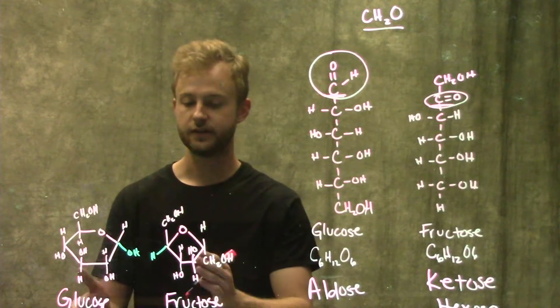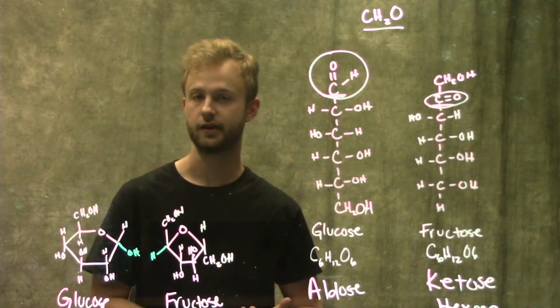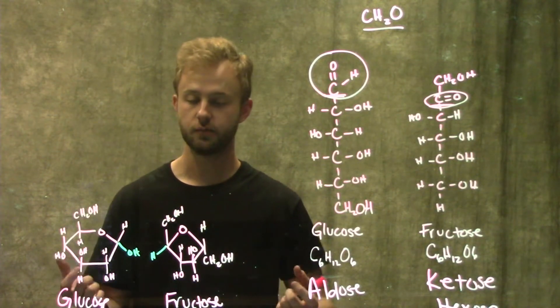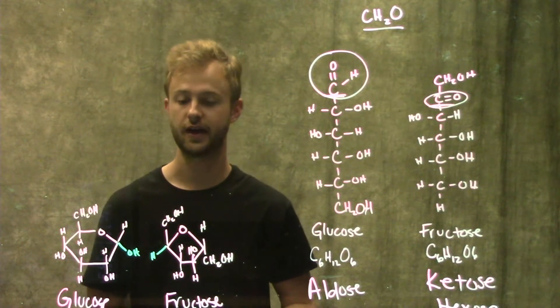Now that we have these two monosaccharides, we can look at how they'll come together to form a disaccharide. We know from the video on polymers and monomers that two monomers get joined together through a dehydration or a condensation reaction.